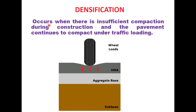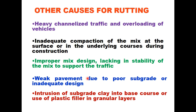Densification is another type of rutting that occurs when there is insufficient compaction during construction, and the pavement continues to compact under traffic loading. There are several other causes of rutting: heavy channelized traffic and vehicle overloading, inadequate compaction of the mix at the surface or underlying courses, improper mix design lacking stability, weak pavement due to poor subgrade or inadequate design thickness, and intrusion of subgrade clay into base courses or use of plastic filler in granular layers.